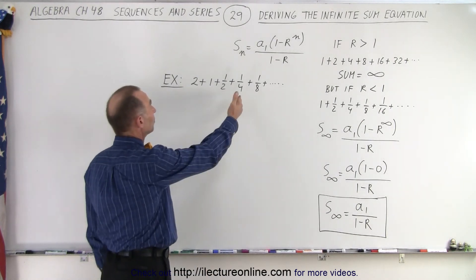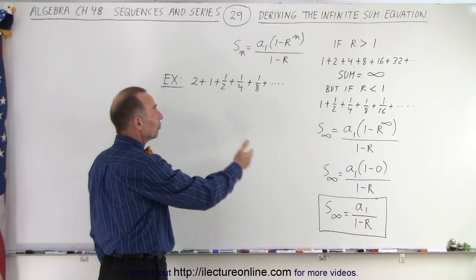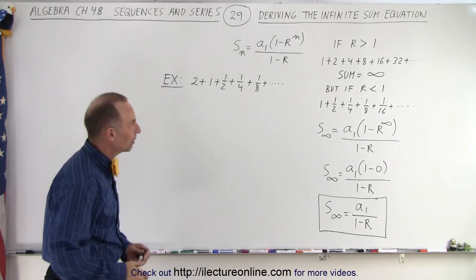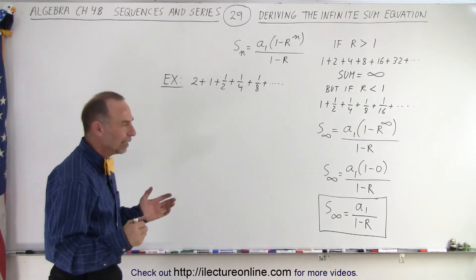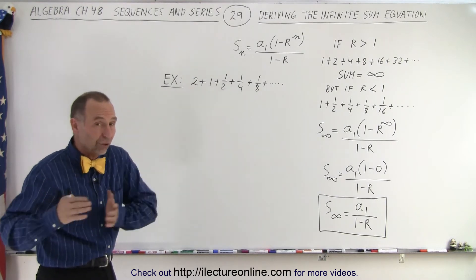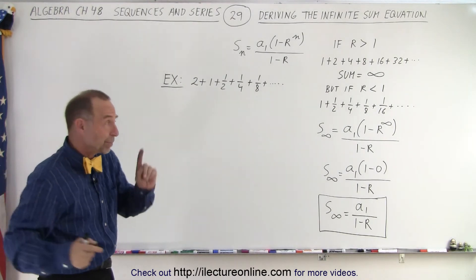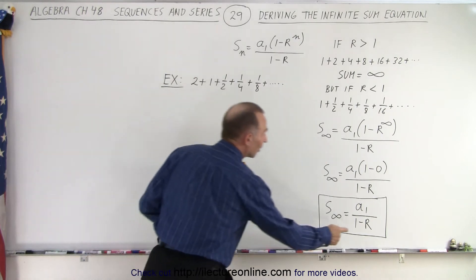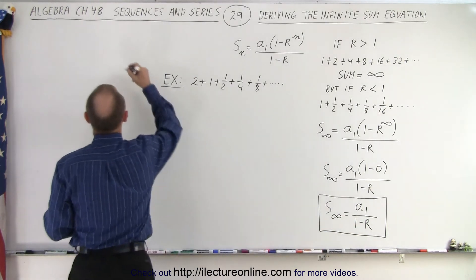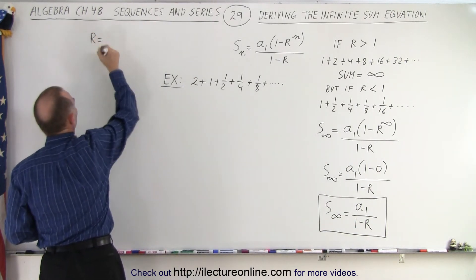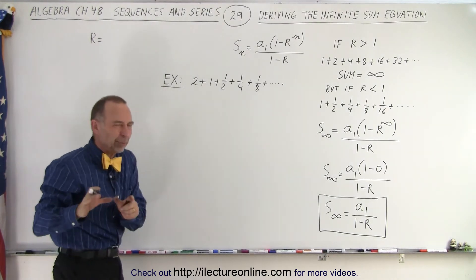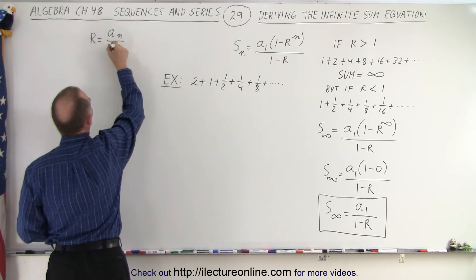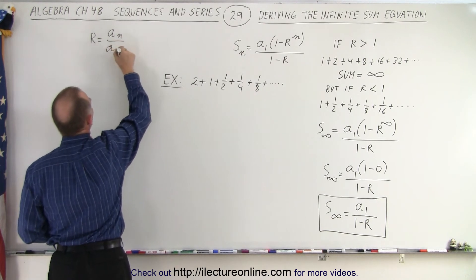Here's an example — let's find the infinite sum of all the terms out to infinity for this particular series. You might ask: if you add up an infinite number of terms, don't you get infinity? Not in this case. But first we need to find the common ratio, which equals a-sub-n divided by a-sub-(n minus 1).